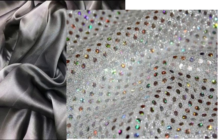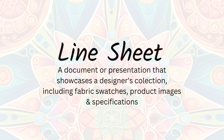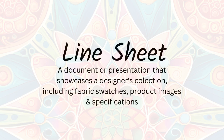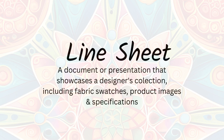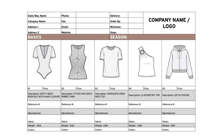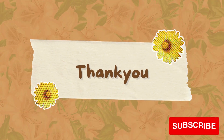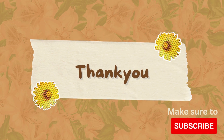Sheen: Fabric or textile wo hote hain jinki appearance shiny or glossy hoti hai. Line sheet: Ek brand ya designer ki latest collection ke products ki images, description or pricing hoti hai, jisse wholesale buyers and retailers ke saath business deal karne ke liye use kiya jata hai. For more videos, subscribe to my channel.